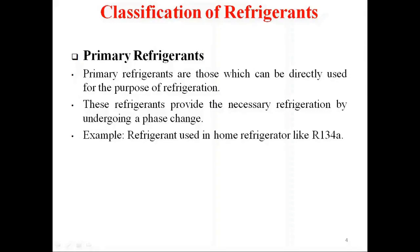Classification of refrigerants. We can classify refrigerants into two types: primary and secondary. Primary refrigerants are those which can be directly used for the purpose of refrigeration. These refrigerants provide the necessary refrigeration by undergoing a phase change. For example, R134A used in home refrigerators, and R22 which is used in air conditioning systems.